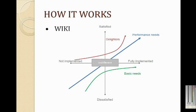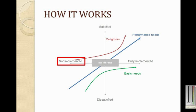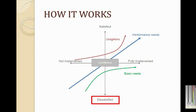To understand how Kano analysis works, we are going to use this model to illustrate the idea. The x-axis represents the level of completeness of a feature — the right-hand side indicates full completeness, while the left-hand side indicates the feature is not included in the system. The y-axis represents the level of satisfaction from the user — the top indicates 100% satisfaction and the bottom indicates the user is totally dissatisfied.